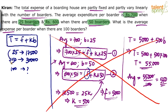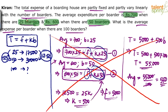When we go from 25 persons to 50 persons, 25 more persons have joined. The expenditure went from 17,500 to 30,000 — an increment of 12,500. With the addition of 25 people, the expenditure went up by 12,500. This increment is the variable component, and the variable component is proportional to the number of persons.